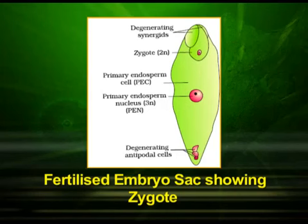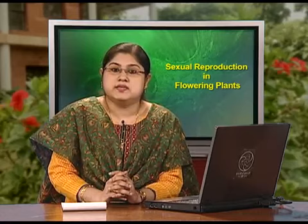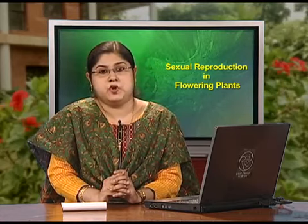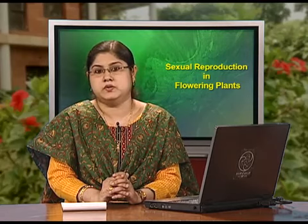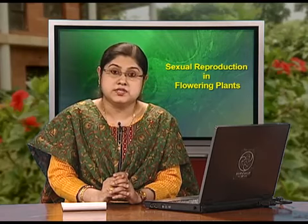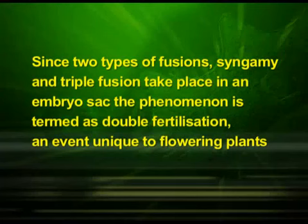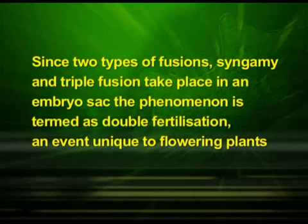You can observe a fertilized embryo sac showing the zygote and primary endosperm nucleus in this diagram. Because this process of producing a triploid primary endosperm nucleus involves the fusion of three haploid nuclei, it is termed triple fusion. Since two types of fusions — syngamy and triple fusion — take place in an embryo sac, the phenomenon is termed double fertilization, an event unique to flowering plants.